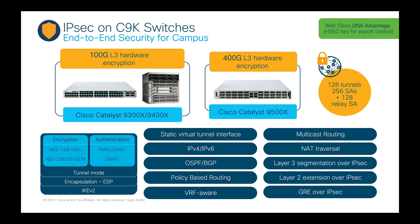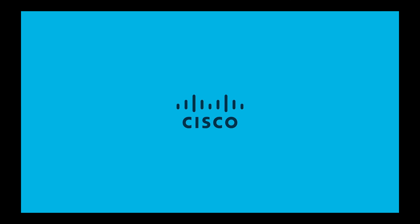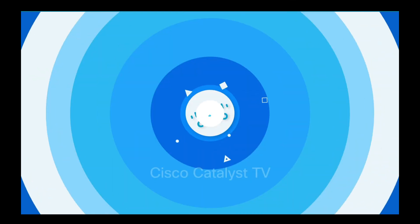Throughout this video, we discussed software-based IPsec tunnel establishment using the IPsec Client application by Kodi Lime. For scenarios where you want hardware-based encrypted IPsec, the Catalyst 9K series also has native IPsec support — up to 100Gbps of hardware-based encryption on the 9300X and 9400X, and up to 400Gbps of throughput on the 9500X — along with a list of software features to complement the hardware. IPsec capabilities include tunnel mode, ESP encapsulation, and open standard IKEv2. This concludes the session — thank you for watching, and please like and subscribe to our YouTube channel.